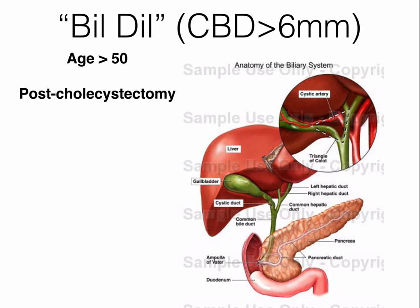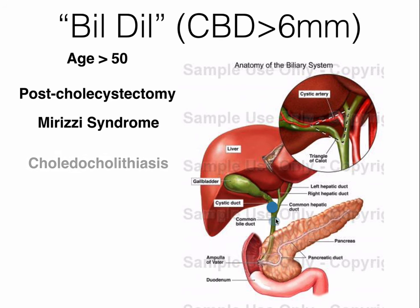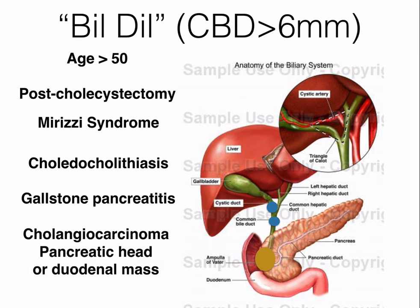If you do see biliary dilation, think of these causes. Remember to adjust the normal diameter range to age, or if they're post-cholecystectomy they will be dilated. If it's still dilated and the patient has acute pain, you can think of Mirizzi syndrome — external compression of the common hepatic duct or common bile duct. You can also think of choledocholithiasis — a stone in the common bile duct causing distention closer to the liver. If it's gallstone pancreatitis, the same applies. A mass, cholangiocarcinoma, a mass in the pancreatic head, or adjacent duodenum compressing the ampulla can also cause dilation.